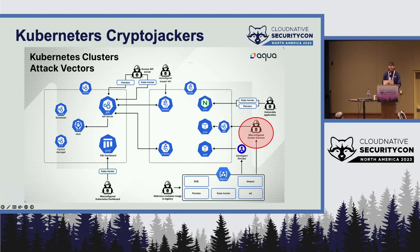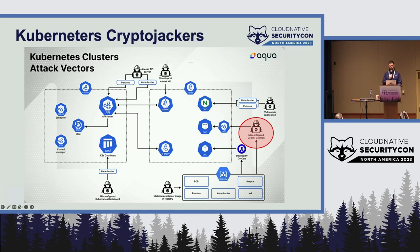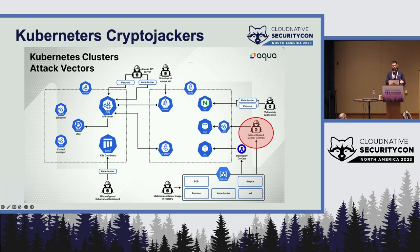The second attack vector is misconfiguration of the Docker daemon. Docker was around before Kubernetes became popular, and we still see customers using it. Misconfiguration means the Docker daemon port is exposed to the internet with no authentication or access control required. Bad actors scan worldwide for this specific port and communicate directly with the API — able to list images, list running containers, get a shell on those containers, and deploy new containers with crypto mining.